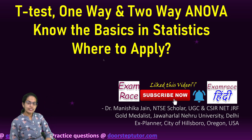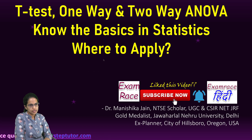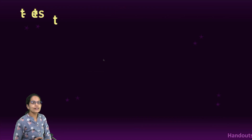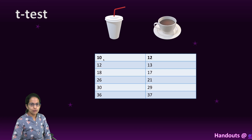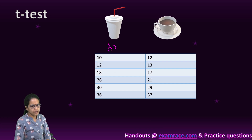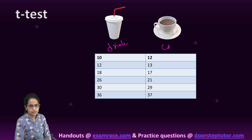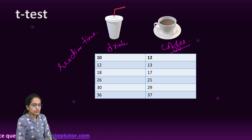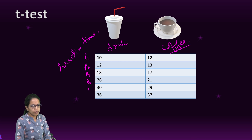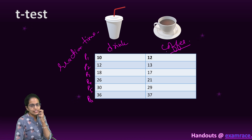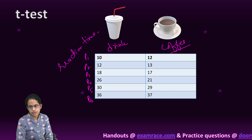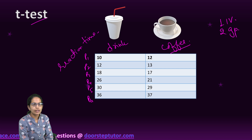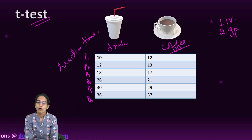In this lecture we would understand the difference between t-test, one-way ANOVA, and two-way ANOVA — just the basics, no statistics. Why do we apply a t-test? Let's say I have two items: a sugary drink and coffee, and I need to find the reaction time for persons one through six. If there are two items with one independent variable and two groups to compare, we use a t-test.